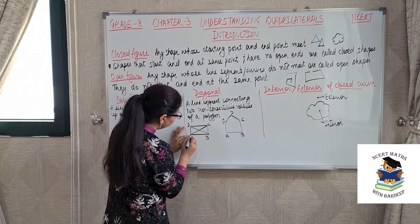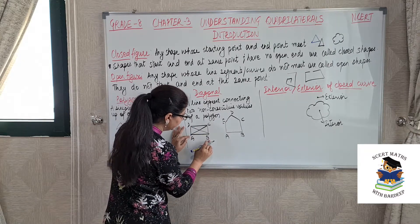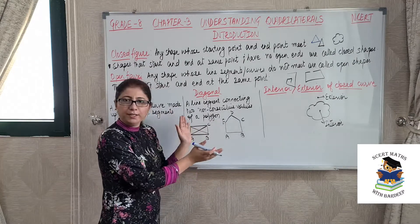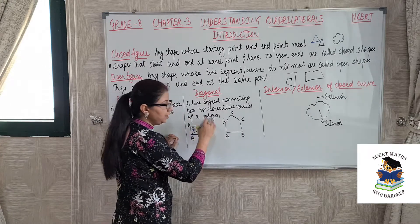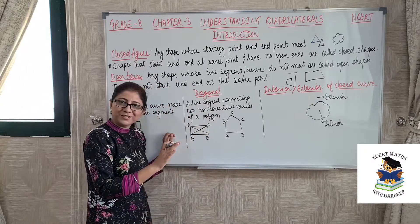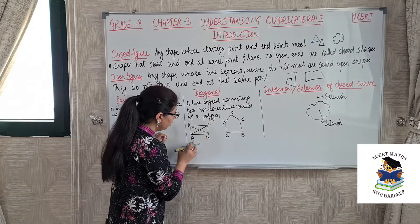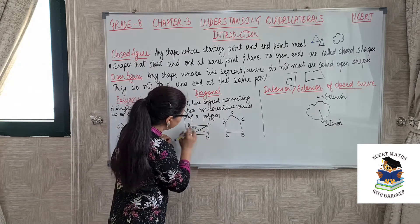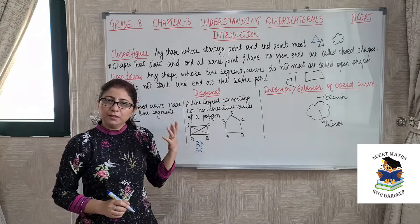For example, if I am looking at vertex A, then B and D are consecutive vertices of A. So I cannot join B and D because they are already joined as edges of the figure. The remaining vertex is C. So the line A to C is a diagonal because it is joining non-consecutive vertices. Similarly for vertex B, we cannot join A and C since they are already edges. So B is joined with D, making BD a diagonal. Thus AC and BD are both diagonals.